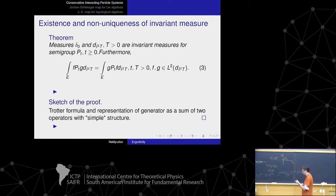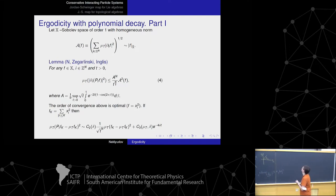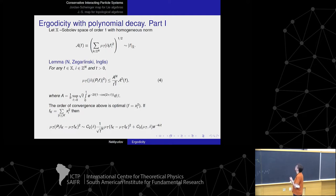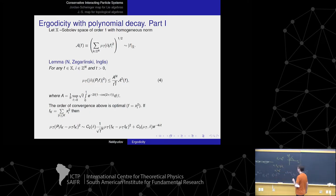Now we go to ergodicity of the system. The main lemma states that the norm of the derivative of the semi-group in direction i converges polynomially to zero, and the rate of convergence is optimal — as seen from a simple example, the rate is exactly T^{-(N/2)}. To prove this lemma, we need a certain algebraic construction.